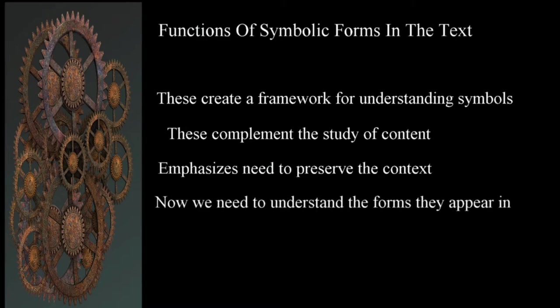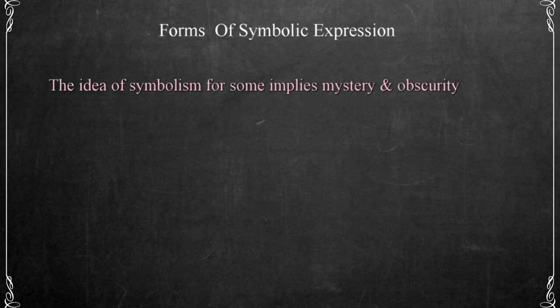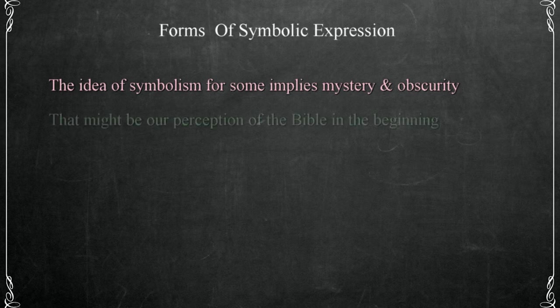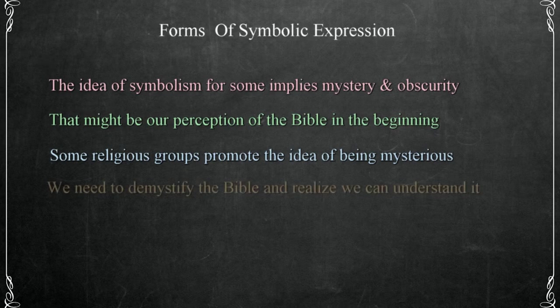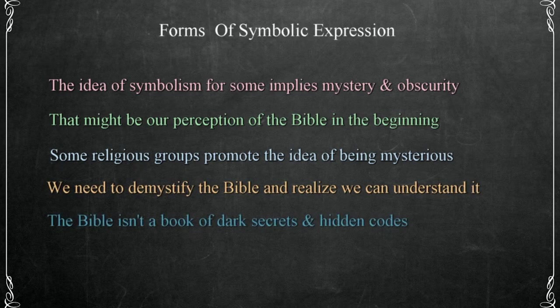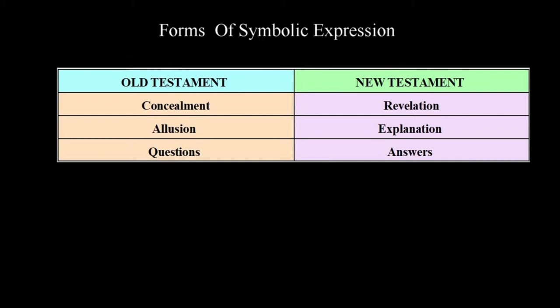Now that we have a definition and identified functions these perform in the scriptures, we need to understand the forms they appear in. The idea of symbols and symbolism for most people brings to mind images of things that are dark, obscure, and mysterious, and as we begin to search the scriptures, that may be how they seem. Some religious groups focus on the mystery of the scriptures and allude to things that we can't understand. One of the things I want to accomplish in this study is to demystify the Bible. God didn't give us a library of hidden meanings and shadowy premonitions — just the opposite. In this chart, I've shown the relationship between the Testaments in a way that will help us understand how God has worked over the ages to accomplish what he set out to do.